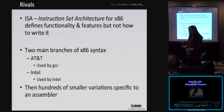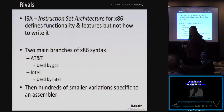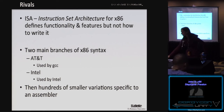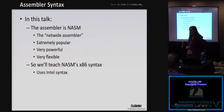The ISA for x86 defines its functionality and features, but it doesn't technically define how to write it. So there are two main branches of x86 syntax. The two branches are AT&T, which is used by GCC's compiler, and Intel, which is used by Intel. There are hundreds of smaller variations, but you'll generally run across either AT&T or Intel syntax for x86. For this talk, I'm going to show you how to use the assembler NASM — the Netwide Assembler — which is extremely popular, free, and uses Intel syntax.